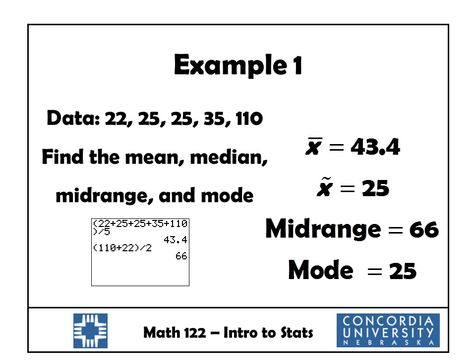For the midrange, we take the largest value, add the smallest, and divide by two — that gives us 66. For the mode, we find the value that occurs most frequently: 25 occurs twice while all other values occur only once, so the mode is 25.